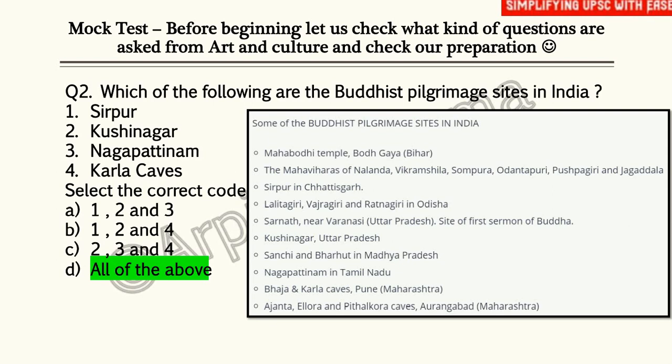The Buddhist pilgrimage sites in India include: Mahabodhi Temple in Bihar; Mahaviharas of Nalanda, Vikramshila, Somapura, Udantapuri, Pushpagiri, and Jagaddala; Sirpur in Chhattisgarh; Lalitagiri, Vajragiri, and Ratnagiri in Odisha; Sarnath in Uttar Pradesh; Kushinagar; Sanchi and Bharhut in Madhya Pradesh; Nagapattinam in Tamil Nadu; Bhaja and Karla Caves in Maharashtra; and Ajanta, Ellora, and Pitalkhora Caves in Aurangabad, Maharashtra.